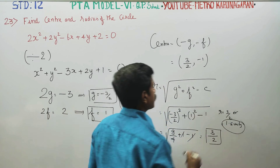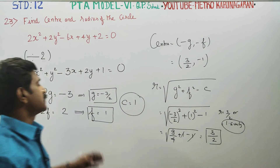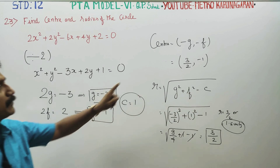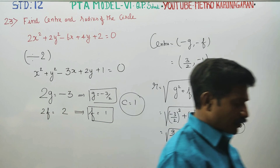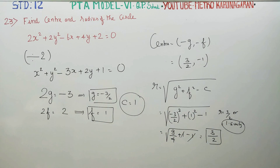So to summarize: center formula is (minus g, minus f), and radius is square root of g squared plus f squared minus c. Thank you.